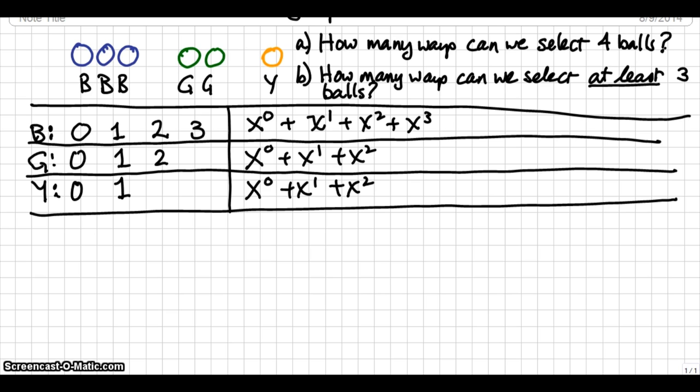But, we are going to now multiply the polynomial representing the choices for blue, the polynomial representing the choices for green, and the one representing the choices for yellow, all together to get a larger polynomial. That larger polynomial will represent the number of ways we can choose items of any number from all three subsets, from the blues,